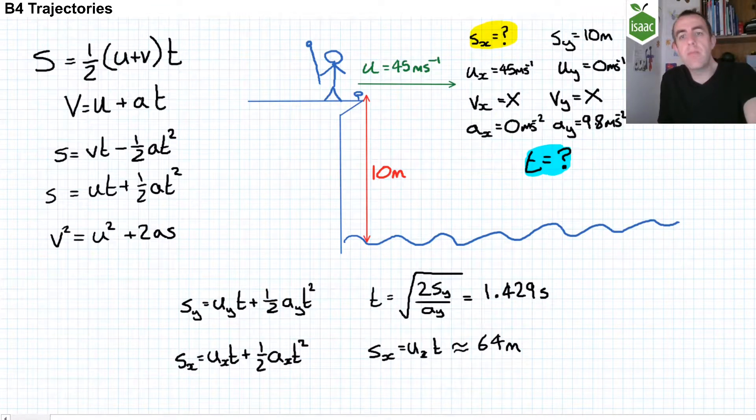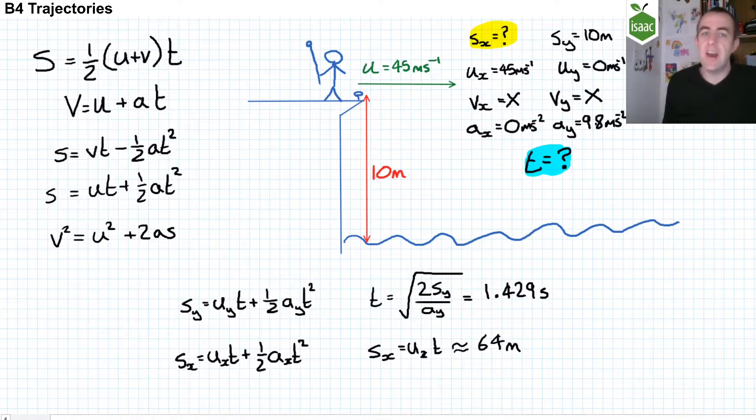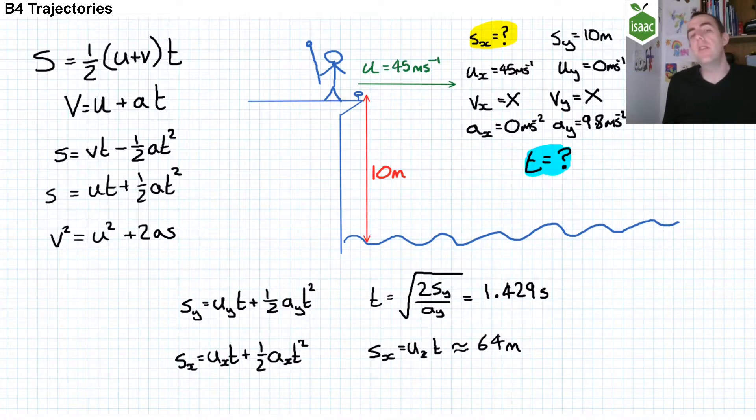Now, if you have a projection which is diagonal, this becomes a little bit more complicated, because you don't have an initial velocity in the y-direction that is zero. Nevertheless, you can use the same approach. The complicated thing is that when you solve for t, you may have to solve a quadratic using the quadratic equation.